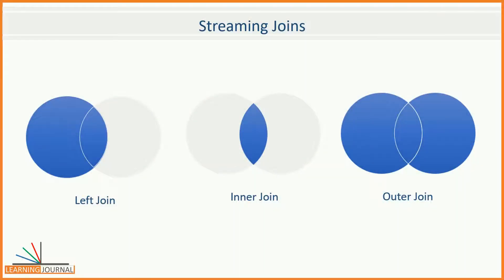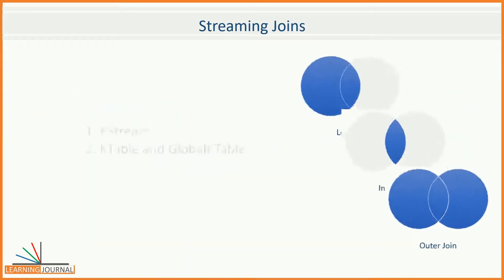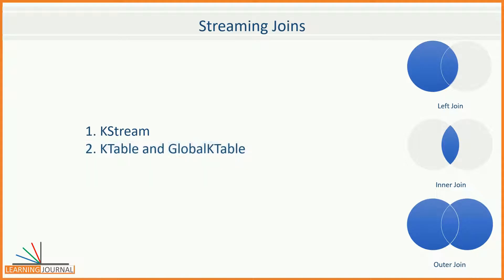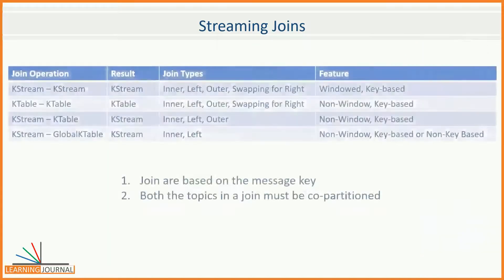Joins are one of the most common and desirable features of any data system. You might be working with a batch system or a real-time system. In both cases, at some point, you would need to join two datasets. In the Kafka Streams framework, your datasets are abstracted into two categories: KStream, KTable, and Global KTable. Hence, you would expect the capability to join a combination of these two types of datasets. The Kafka Streams API supports the following join operations.